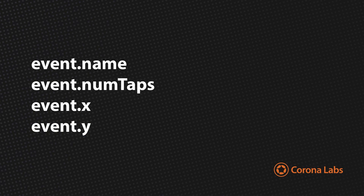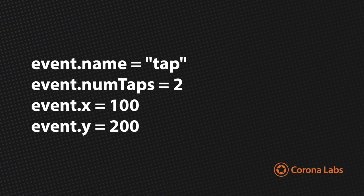In the case of a tap event, event.name will contain the string value 'tap'. Event.numTaps will contain the number of taps on the screen, and event.x and event.y will contain the x and y coordinates of where the tap occurred.